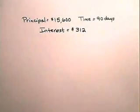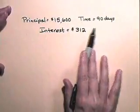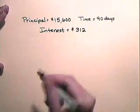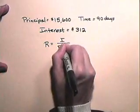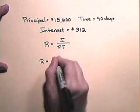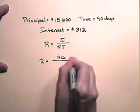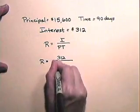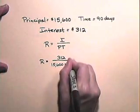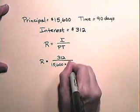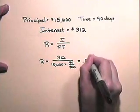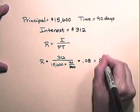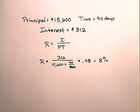Now let's do an exercise in which we find the rate. The principle is $15,600, the time is 90 days, and the interest is $312. The rate equals interest divided by principle times time. So the rate is $312 divided by $15,600 times 90 divided by 360. This fraction equals 0.08, or 8%. So our rate is 8%.